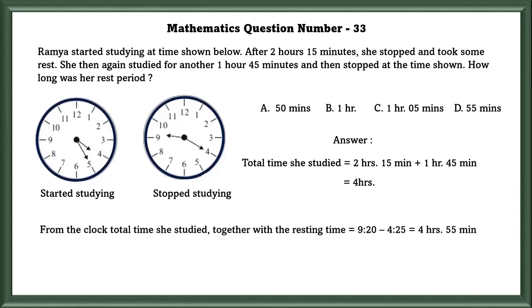From the clock, the total time she studied together with the resting time equals 9:20 minus 4:25, which equals 4 hours 55 minutes. In order to find out how much time she took rest, we have to subtract the total time she studied from the clock time with resting, which equals 4:55 minus 4:00, which equals 55 minutes. She rested for 55 minutes.